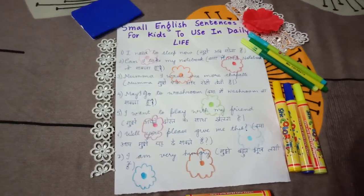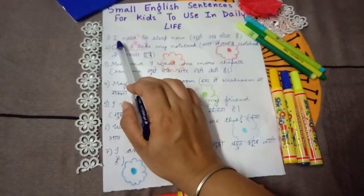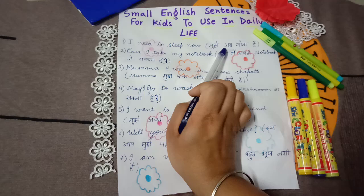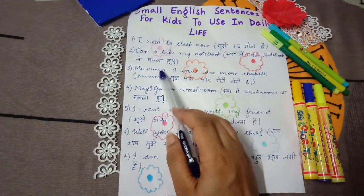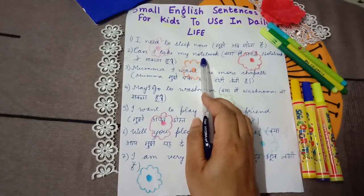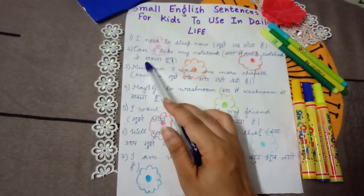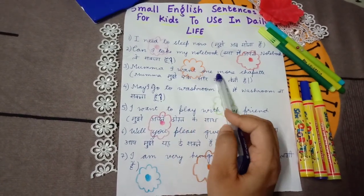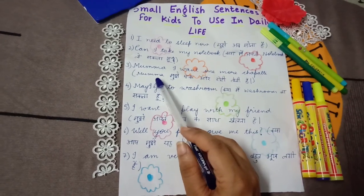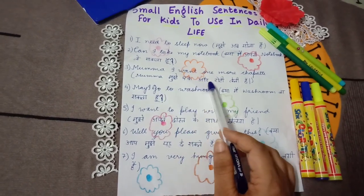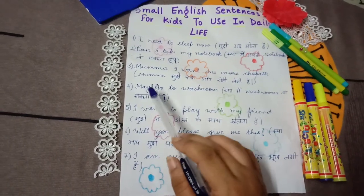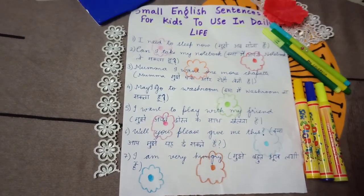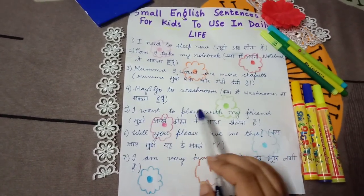Number one: I need to sleep now — mujhe ab so na hai. Can I take my notebook? — kya mein apni notebook le sakta hun. Mama, I want one more chapati — mama mujhe ek aur roti leni hai. May I go to washroom? — kya mein washroom ja sakta hun.